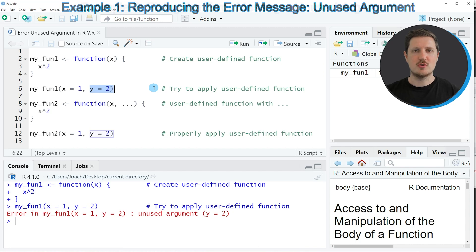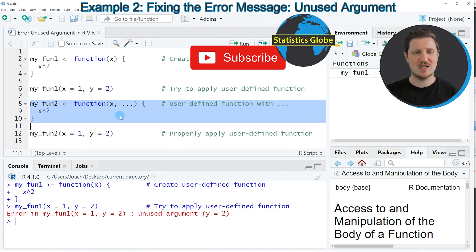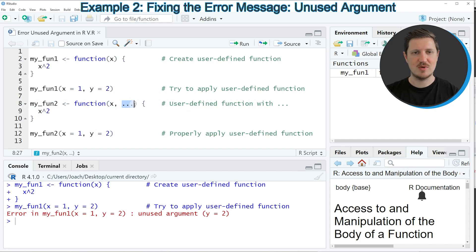If you want to change that, we can use the code that you can see in lines 8 to 10. In these lines, I'm using basically the same syntax as in the previous example. However, this time I'm specifying these three dots as additional possibilities for additional arguments in our user-defined function.